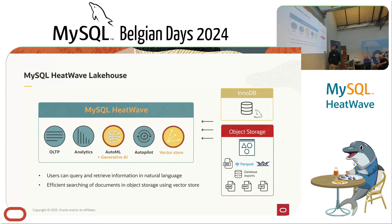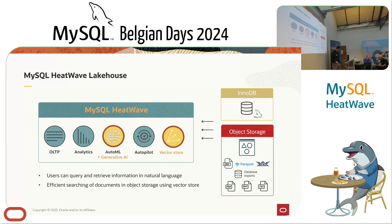This is needed so that users can query information in natural language and to allow efficient searching of documents in object storage using vector store. As part of these additional features, we're also going to add support for additional types of files in object storage — not only semi-structured files like CSV, Parquet, Avro, or Microsoft database exports, but also unstructured files like PDF and PowerPoint.